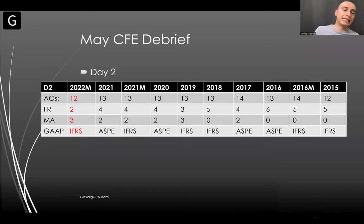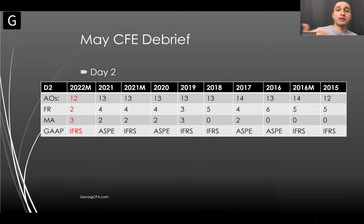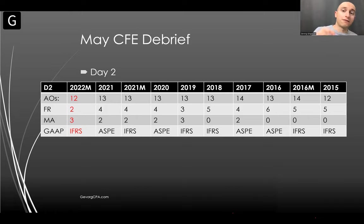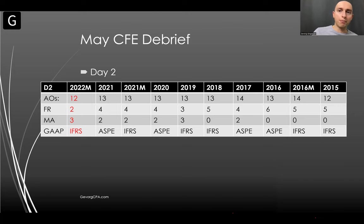The GAAP standard was IFRS — a big question students ask about since you don't want to study everything. Unfortunately I can't predict that, but typically we see alternating standards. It looks like it switched to IFRS this time, so potentially for September 2022 you may have an ASPE case, but there are no guarantees. I recommend studying both.